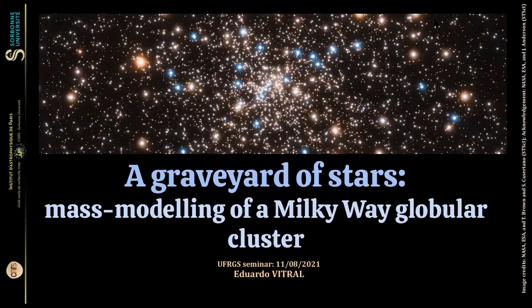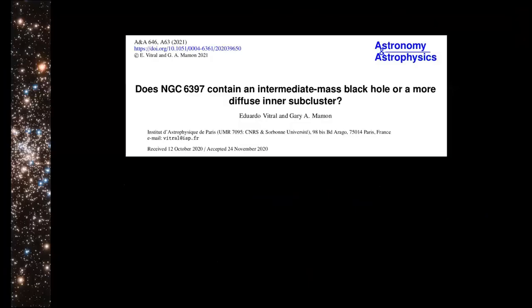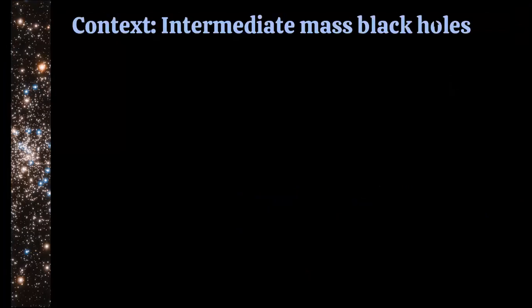In order to give some context, if you want more details about this work, I warmly invite you to read the paper, which is in open access in A&A with the title: 'Does NGC 6397 Contain an Intermediate Mass Black Hole or a More Diffuse Inner Subcluster?' And in order to give some context about why we started looking at this globular cluster, first of all, we're going to talk about intermediate mass black holes. So what are they?